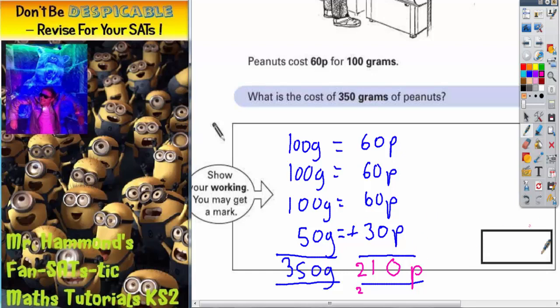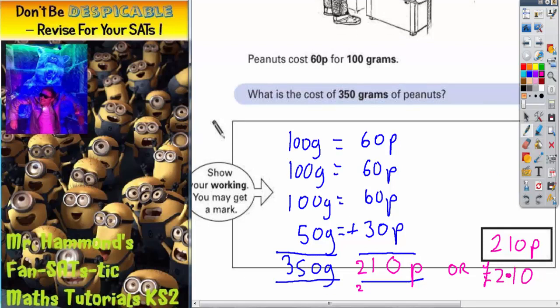Now, noticeably, the answer box does not have any units. It's just an empty space. So at this point, we can choose our units. So we can put 210p, or we could put £2.10. Either of those would mean the same thing. But if you're going to put £2.10, you've got to make sure you put your decimal point in. Otherwise, you're putting 210 pounds, and it definitely doesn't cost that. So be very careful with your units.